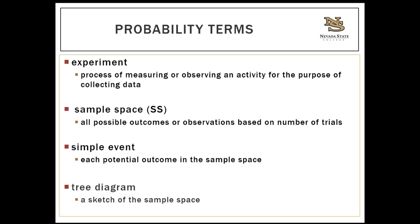A tree diagram is when you sketch the sample space to ensure no outcomes are omitted or repeated, preventing mistakes in determining the sample space. To make a tree diagram, you start with each outcome for the first trial, then branch each outcome for each additional trial from those first outcomes. Tree diagrams are really more useful for classical probability; for empirical probability, we'll mostly be looking at frequency distribution tables. But it's important to be familiar with this terminology.